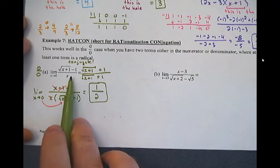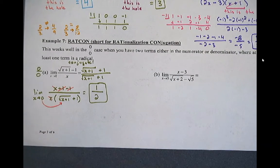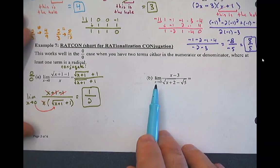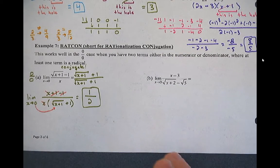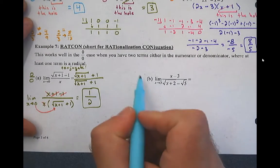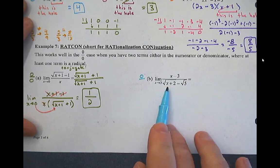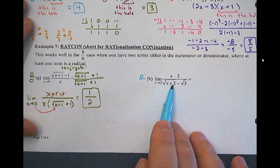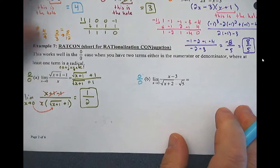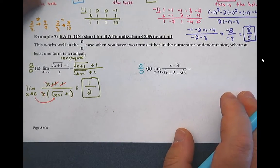So if you see a root and you want to clean up that root, multiply by the conjugate. You can't just square it. Pause here and try the next one on your own. Hopefully you did a direct substitute: three minus three is zero, and square root of five minus square root of five is also zero. So we have a hole — we just need to figure out where it's located.